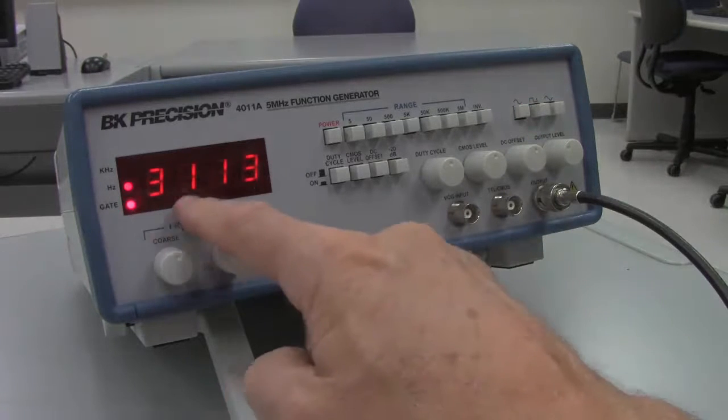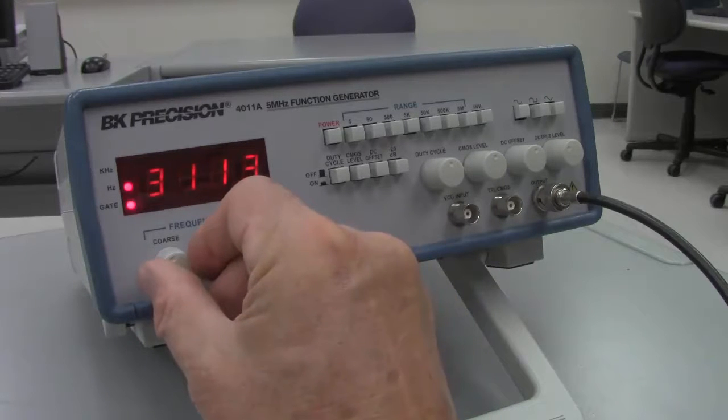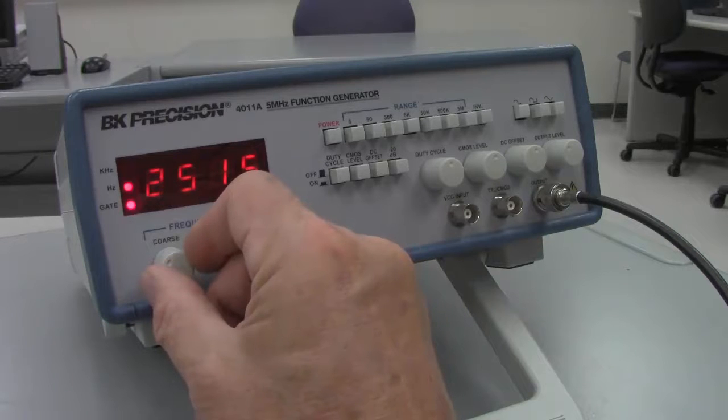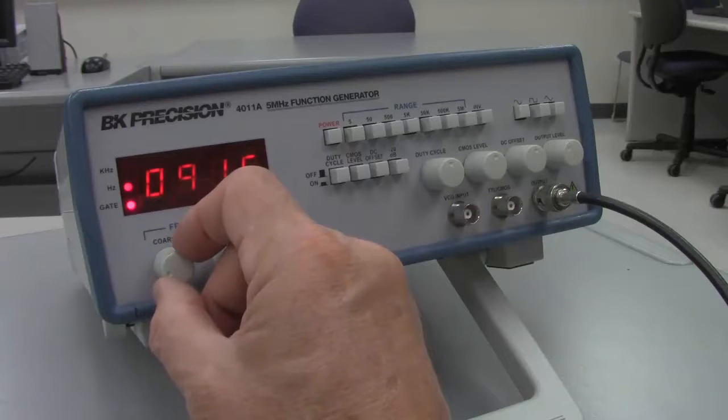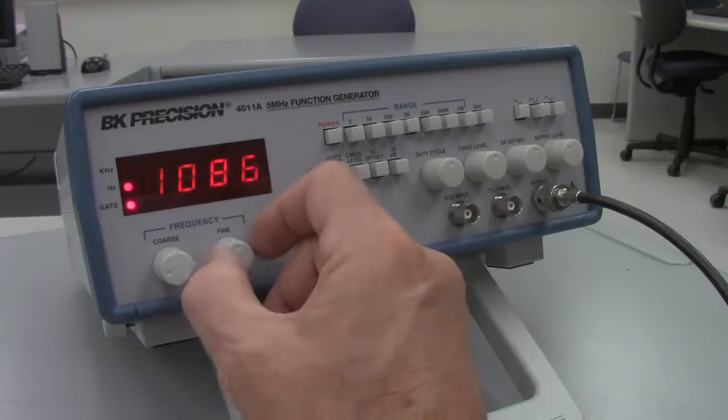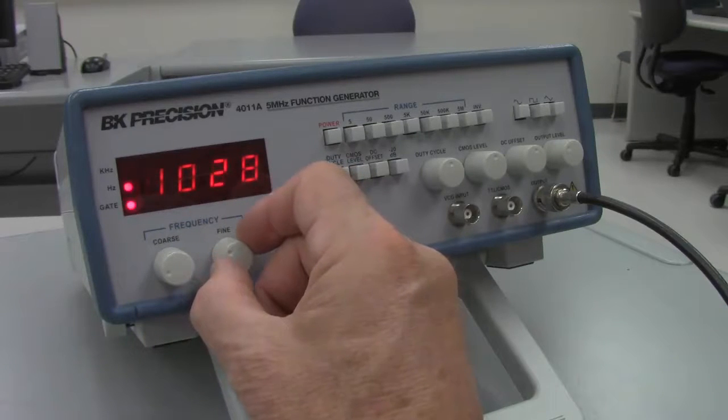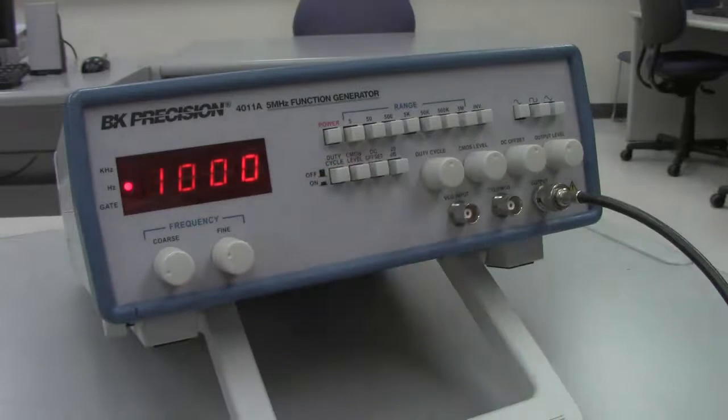It comes up and tells me that it's about 3,113 hertz, or 3.1 kilohertz. So let's just go ahead and adjust it down. I'd like to get pretty close to 1,000 hertz. Using the coarse adjustment to get close, now let's just try to adjust it down using the fine adjustment, and we get down to 1,000 hertz.